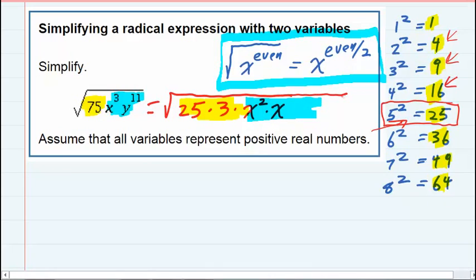And then the y¹¹, I can make that y¹⁰ times one more y. And the reason I wanted to do that was now these have even exponents, and I'll be able to use that rule at the top.